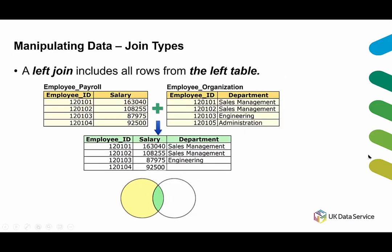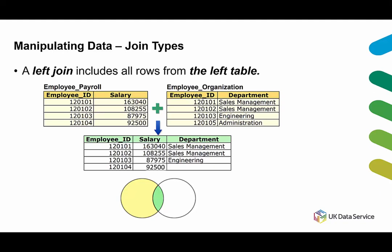A left join includes all rows from the left table — meaning the table you put first in your command. Similarly, a right join includes all rows from the right table, which is the table you put in second place in your command. These two types of joins are very sensitive to the order of the tables in the command, so we need to be careful about which table we put first.